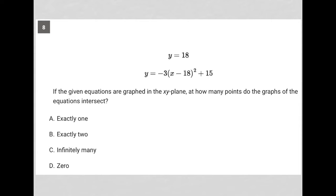So this question starts off by providing us with a system of equations. In this system, however, we're told that y is equal to 18, which means we could just take that 18 and replace y here with 18, leading us to have 18 equals negative 3 parentheses x minus 18 squared plus 15.